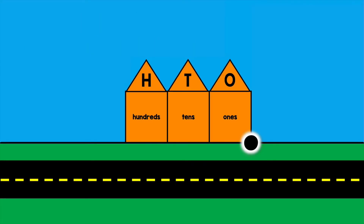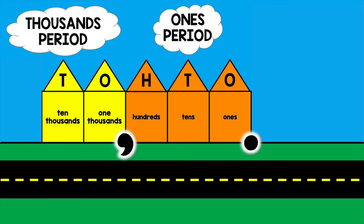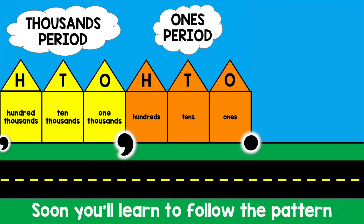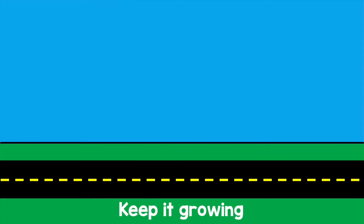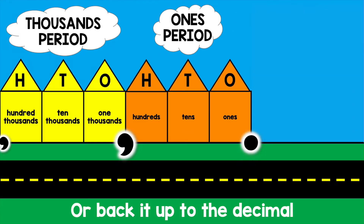Ones, tens, hundreds. A comma splits the periods. One-thousands, ten-thousands, hundred-thousands, comma. Soon you'll learn to follow the pattern and keep it growing — millions, billions, trillions.